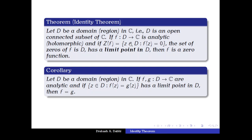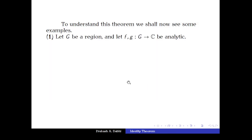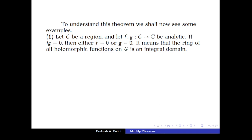Now we go to the first example. Let G be a region and let f and g from G to ℂ be analytic. If the product f(z)·g(z) = 0 for all z in the region G, then either the function f is identically zero or g is identically zero.